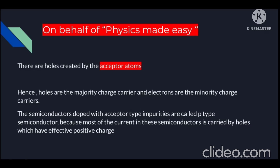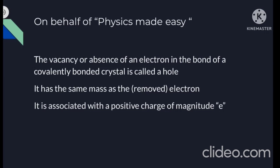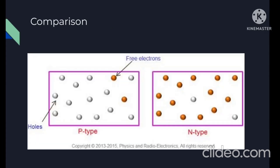The semiconductors doped with acceptor type impurity are called P-type semiconductors. Why is it called acceptor type impurity? Because each trivalent impurity atom accepts one electron from the valence band of the silicon, so it is known as acceptor impurity, and this semiconductor is known as P-type semiconductor. The actual definition of a hole: a hole is a vacancy, or it is the absence of an electron in the bond of a covalently bonded crystal. It has the same mass as the removed electron and is associated with a positive charge of magnitude e, meaning it shows the nature opposite to that of an electron.